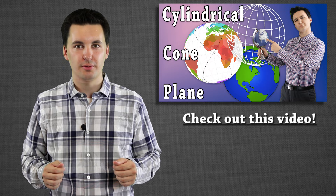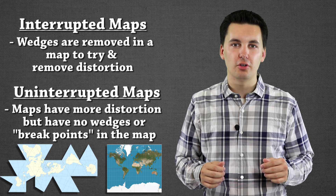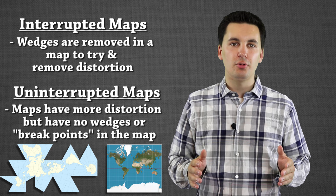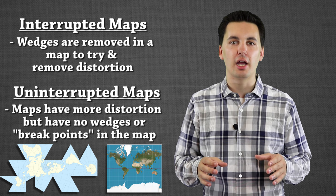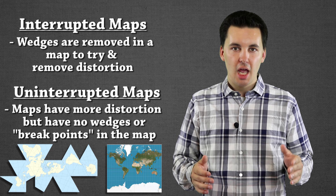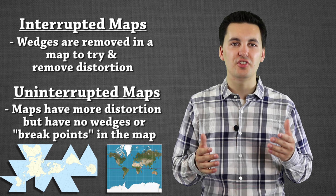Before I get into the different types of map projections, it's important to understand the difference between an interrupted map and an uninterrupted map. An interrupted map is where we've actually taken chunks of the map out — we have removed wedges. The goal of this is to try and reduce distortion, particularly with the size and shape of land masses. The one big disadvantage is that our oceans become harder to read and we're missing chunks, so it's not good for navigation or direction.